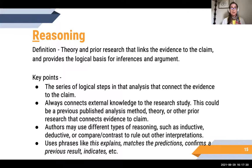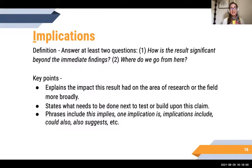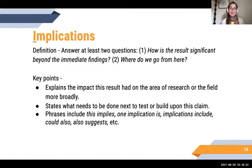The last point in CERI is Implications, which answers at least two questions: how is the result significant beyond the immediate findings, and where do we go from here? Implications explain the impact of the result on the area of research or on the field more broadly, and state what needs to be done next to test or build upon the claim. Key phrases are very obvious: 'this implies,' 'one implication is,' 'implications include,' 'also suggests,' 'could also suggest.' And they're often at the end of the paper, which makes them even easier to find.